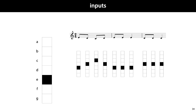This gives us seven one-hot vectors for the seven possible notes, and we can just string these together in a sequence to represent the sequence of notes.